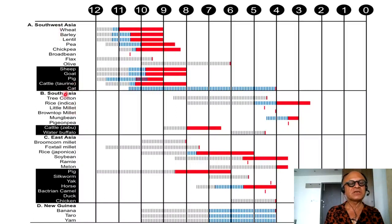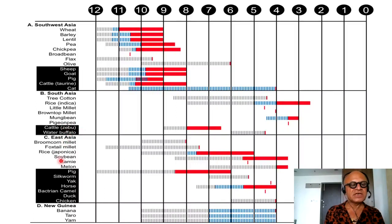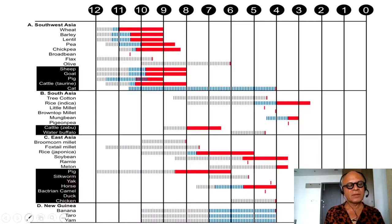Water buffalo is now also found in Madagascar, for example. East Asia has broomcorn millet, foxtail millet, different kinds of rice — indica and japonica — soybean, ramie, and melon, with pig, silkworm — showing more sophisticated domestications — yak, horse, Bactrian camel, duck, and chicken. In New Guinea, you have banana, taro, and yam.